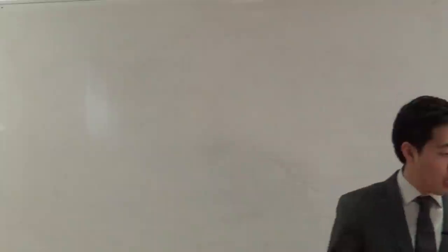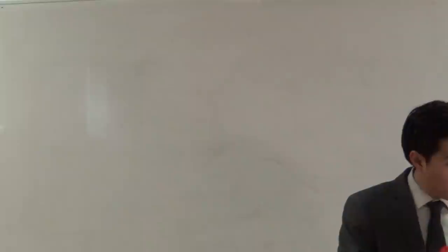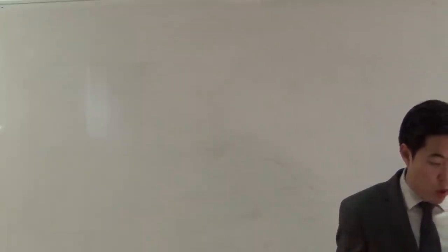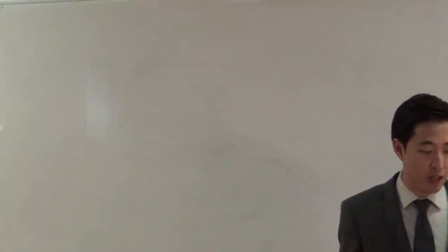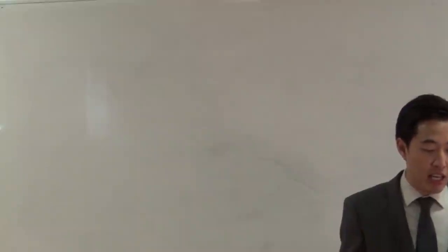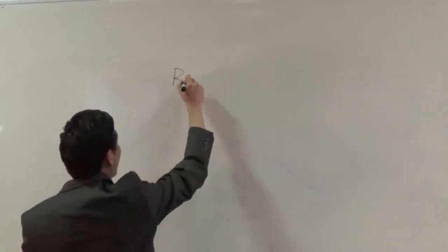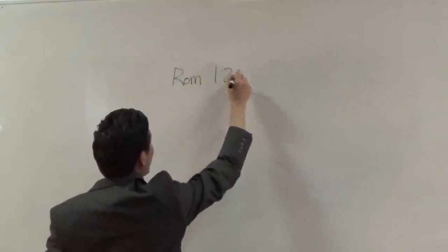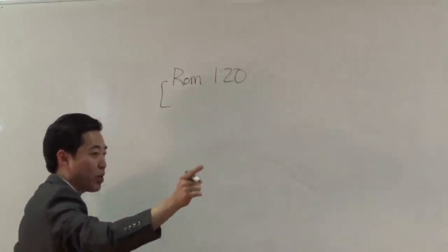First of all, Romans chapter 1, and notice what the Bible says concerning God's creation. We're going to read verse 20: 'For the invisible things of Him from the creation of the world are clearly seen, being understood by the things that are made, even His eternal power and Godhead, so that they are without excuse.' Notice right here that according to Romans 1:20, everything is created by Him, and it bears the imprint of the Creator.